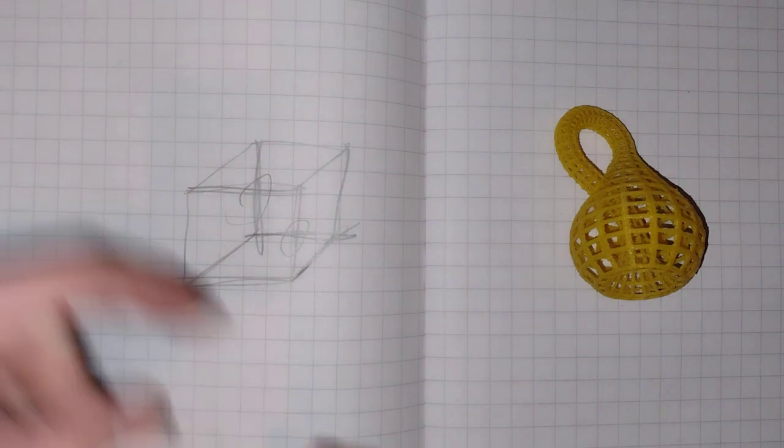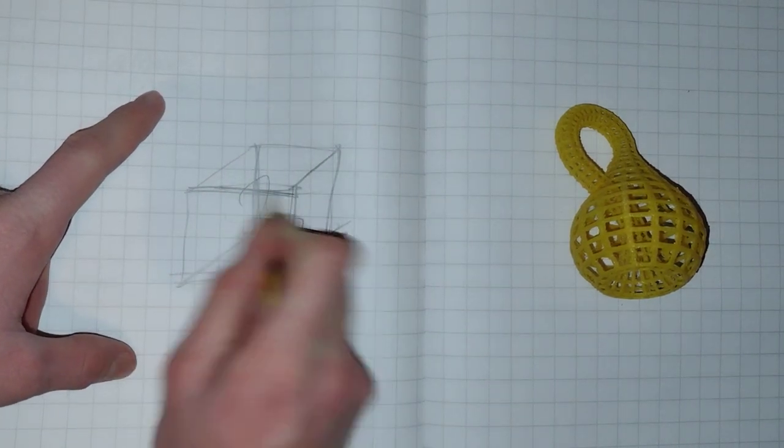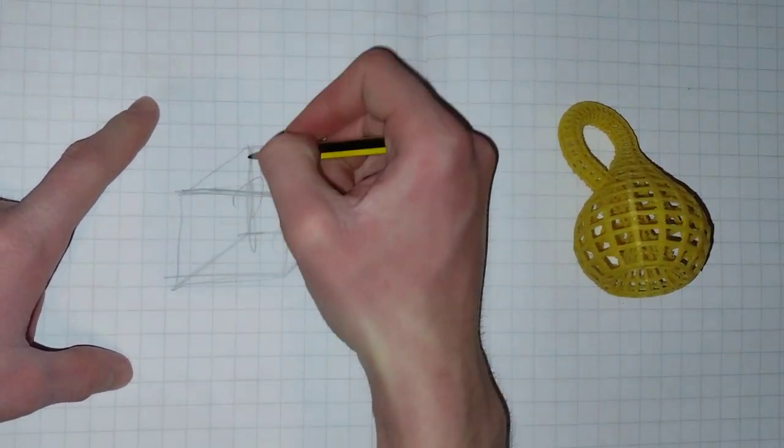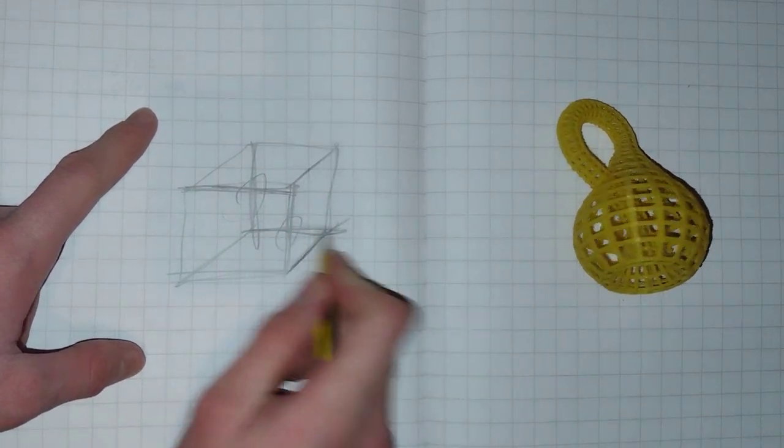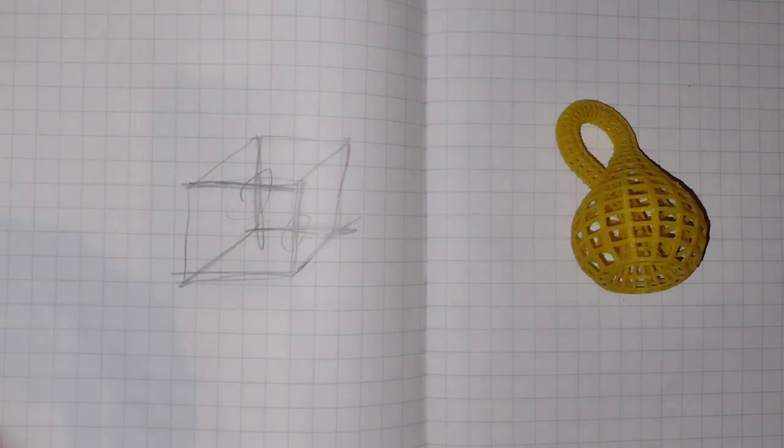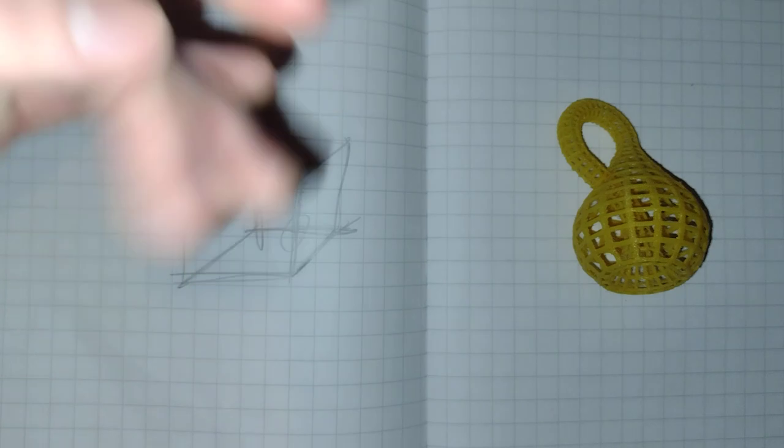And you might be saying, well no, of course this line here is going in front of this one at the back. And this one back here down here is going in front of this one at the back. But we can only say that because we live in three dimensions and we're used to it.